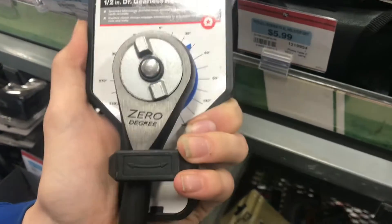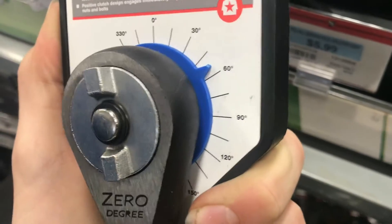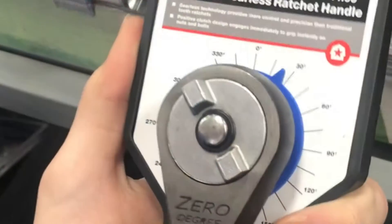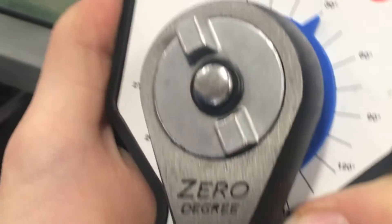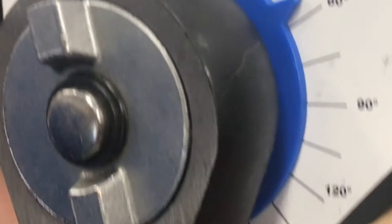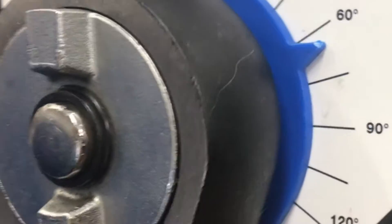These zero-degree gearless ratchets are very interesting. Instead of ratchets, there's bearings inside of this. So you can move the handle less than five degrees, and it'll catch.